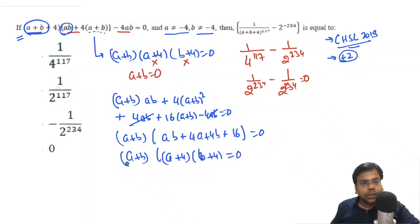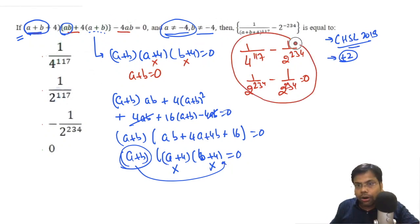We have a plus b and this value is a plus 4 into b plus 4. If we factorize we'll get the same thing. We know a plus b into a plus 4 b plus 4 equals 0. This cannot be minus 4 so this cannot be 0, this cannot be 0, and we put the value and get the answer.